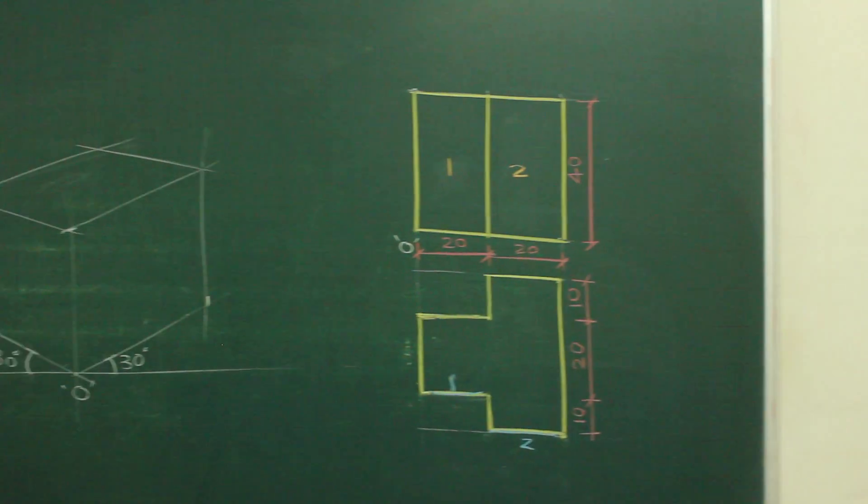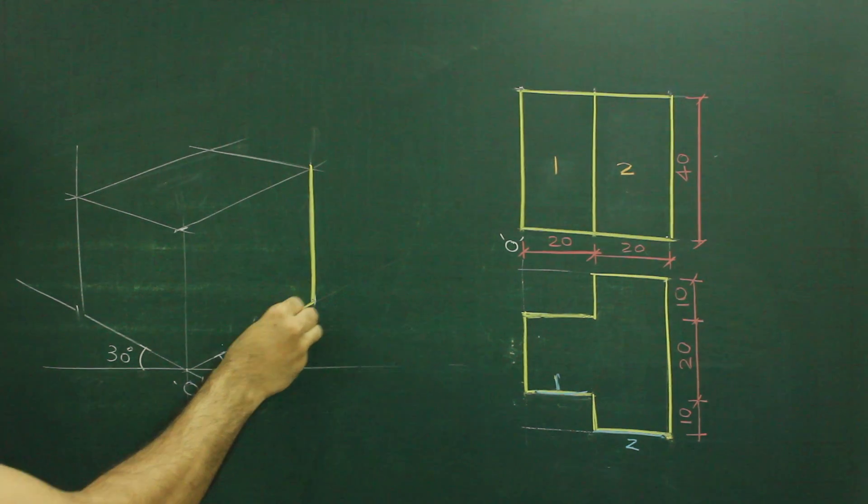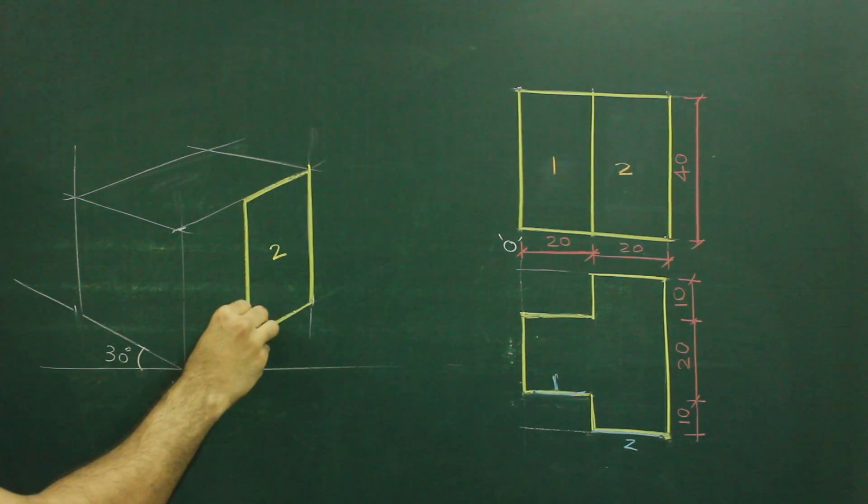So first we will draw this rectangle. The dimensions are 40 by 20. So we will take 40, 20 and we will draw this. So what we have drawn? We have drawn part 2.